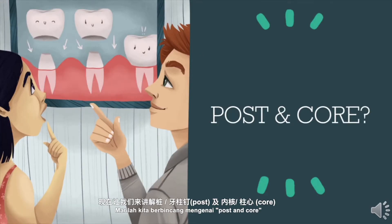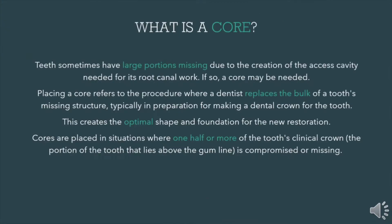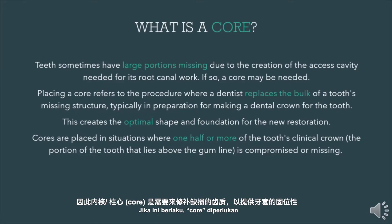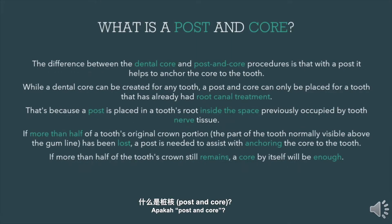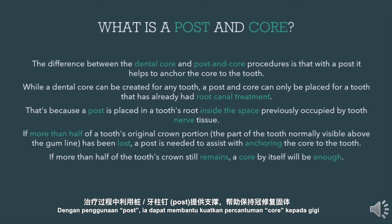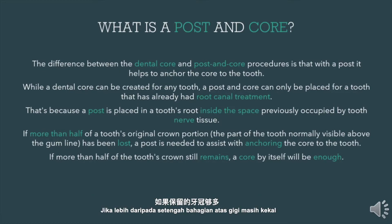Next, let's talk about post and core. What is a core? Teeth sometimes have large portions missing due to the creation of the access cavity needed for root canal work. If so, a core may be needed. The difference between the dental core and post-and-core procedures is that with a post, it helps to anchor the core to the tooth. If more than half of the tooth's crown still remains, a core by itself will be enough.